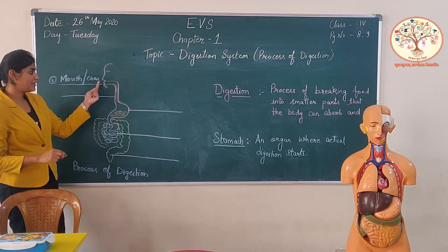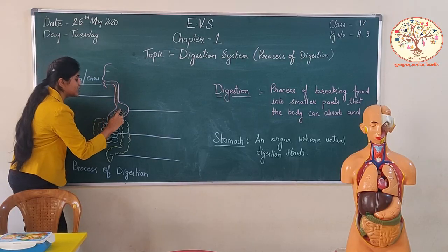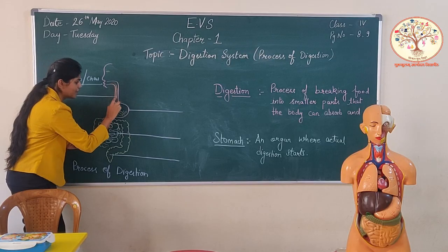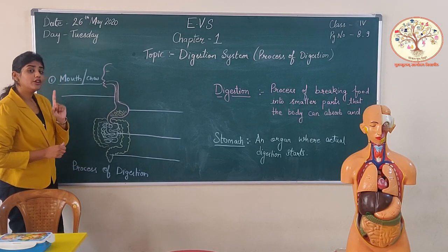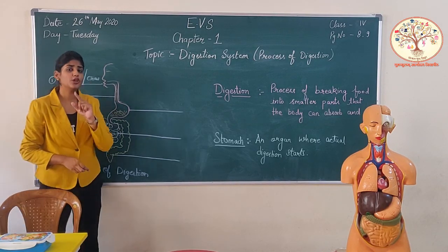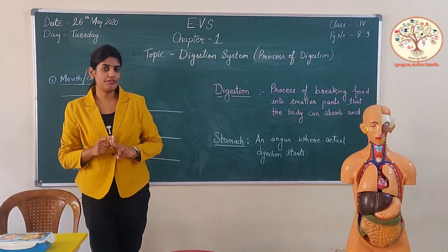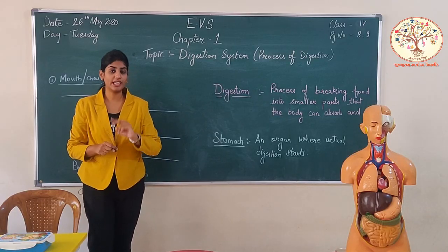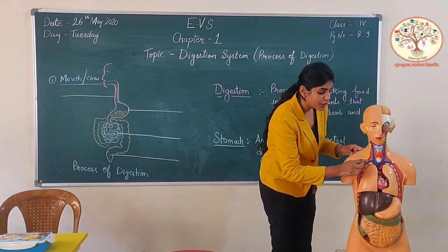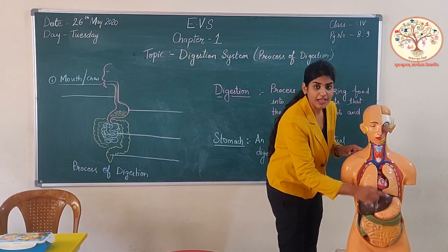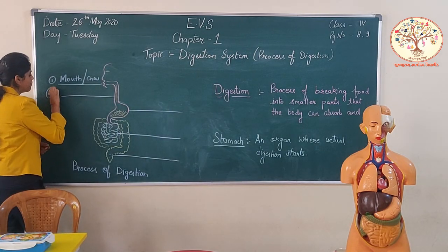We eat our food from the mouth, chew it properly, then swallow it and the food goes inside the stomach. It travels through a pipe-like structure — we call it the food pipe. Students, don't get confused between wind pipe and food pipe. Wind pipe is always connected to lungs, and food pipe is connected to the stomach. So our food goes to the stomach through the food pipe.